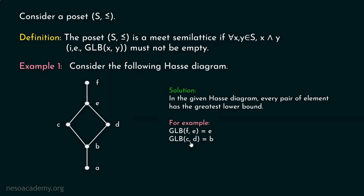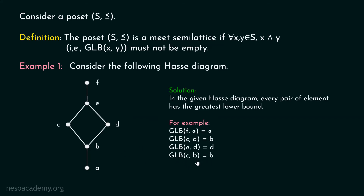Similarly, if you want to identify the greatest lower bound of c and d, we have to trace the path down and see the first point where they meet. I am considering these two elements c and d — this is the first point where they meet. So b is the greatest lower bound of c and d. Then obviously, greatest lower bound of e and d is d, and greatest lower bound of c and b is b, and so on. In this way, you would be able to identify the greatest lower bound in the easiest way possible.